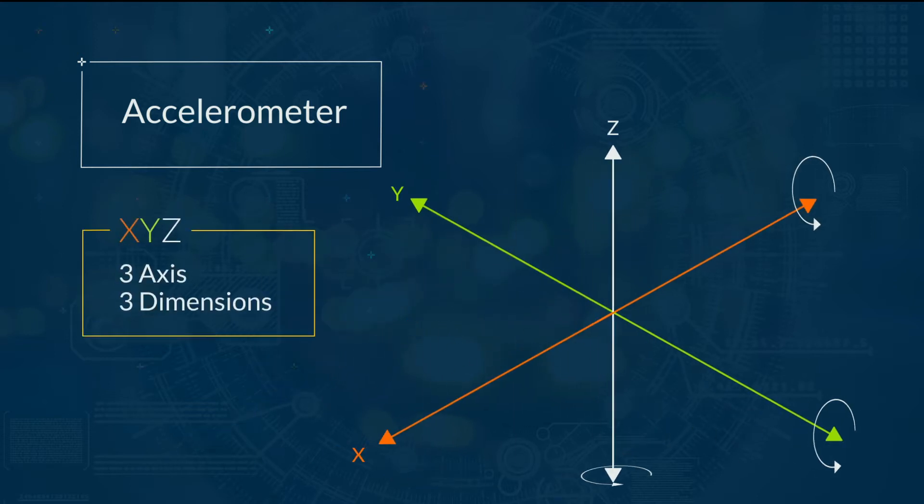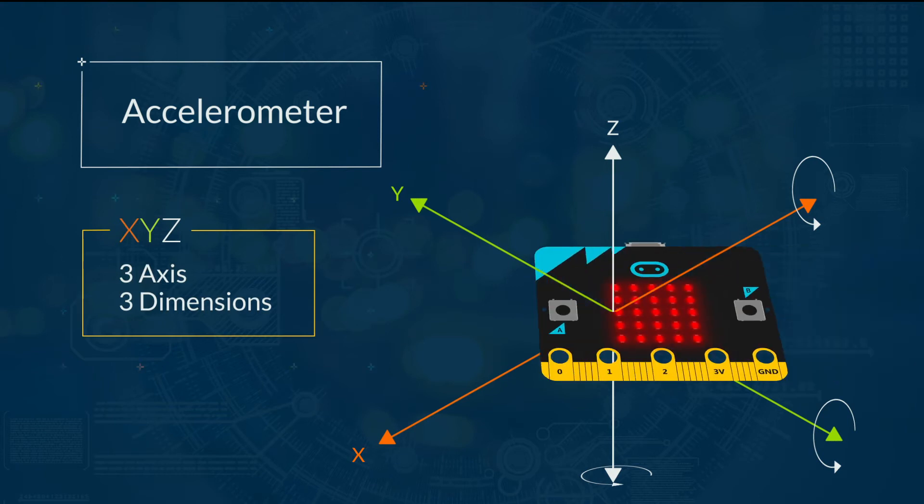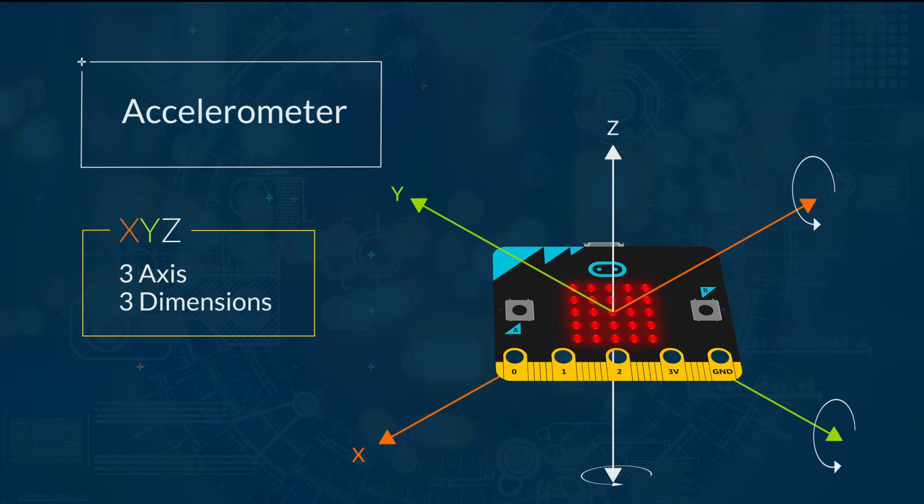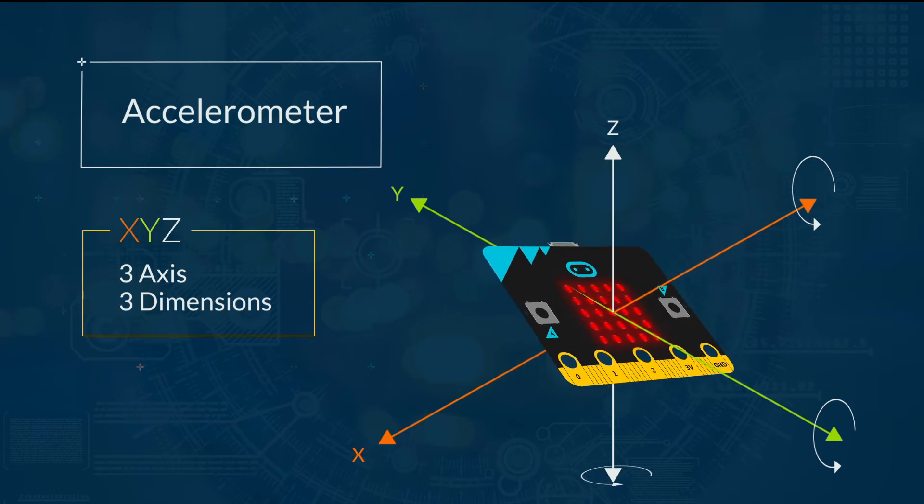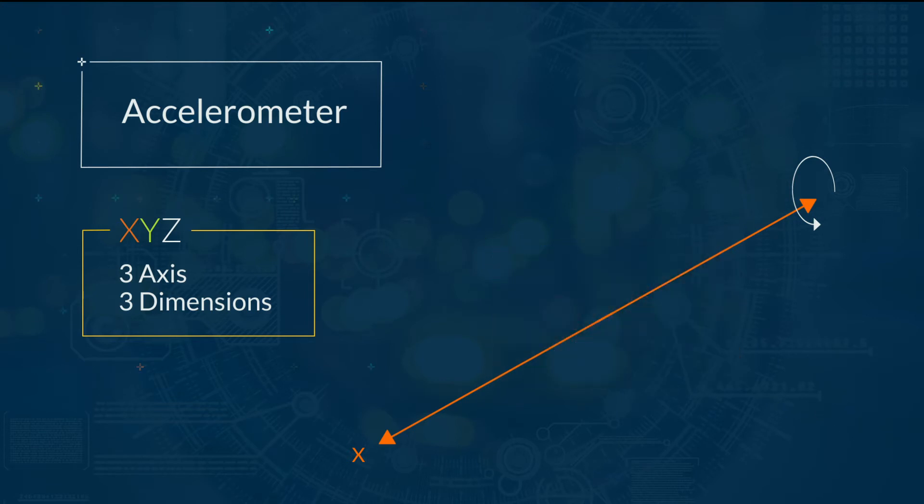There are three axes because we work in three dimensions. Hold your micro:bit out in front of you. Tilt it to the left, then the right. This is the x-axis.